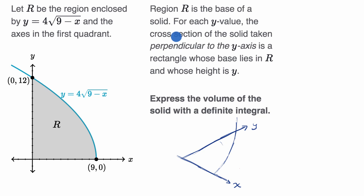So it says the cross-section of the solid taken perpendicular to the y-axis, so let's pick a y value right over here. We're gonna go perpendicular to the y-axis. It says whose base lies in R, so the base would look like that. It would actually be the x value that corresponds to that particular y value, so I'll just write x right over here. And then the height is y. So the height is going to be whatever our y value is.